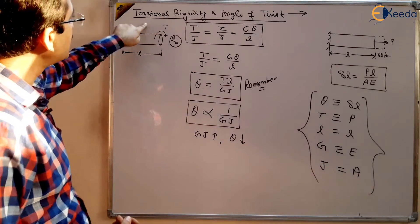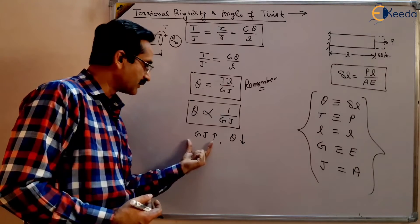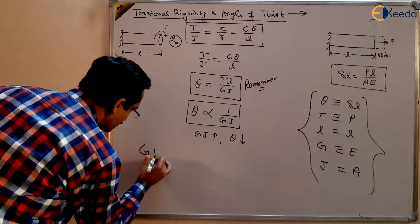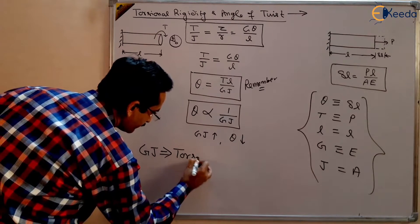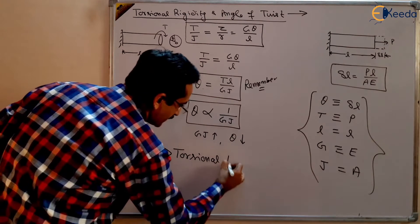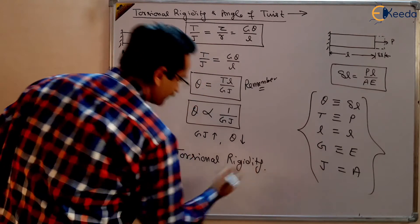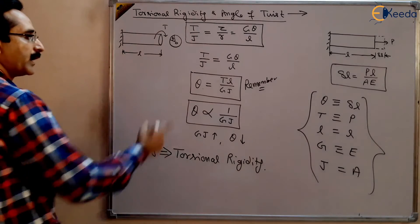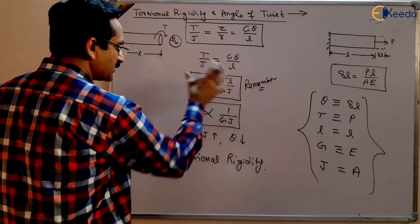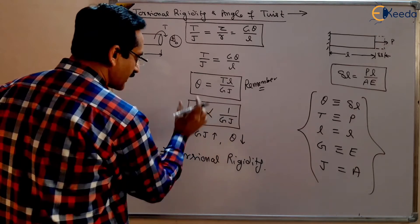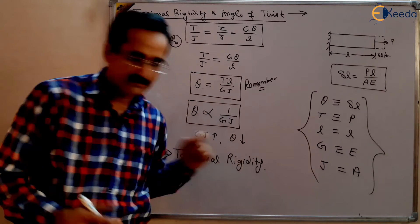This is torsional rigidity we are writing here. This term GJ is given a name here. This is called torsional rigidity. And if torsional rigidity is higher, angle of twist will be lower. So you should remember this equation as well as this: that GJ is higher, theta is lower, and GJ is higher. This is called torsional rigidity.